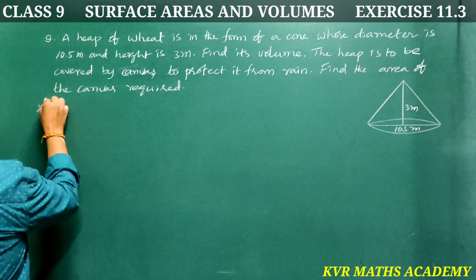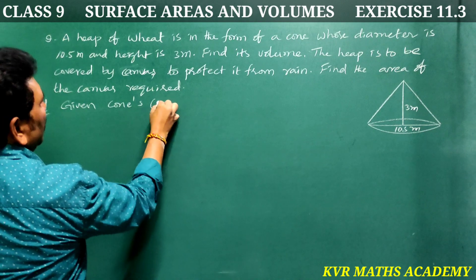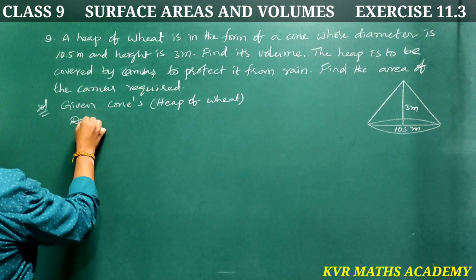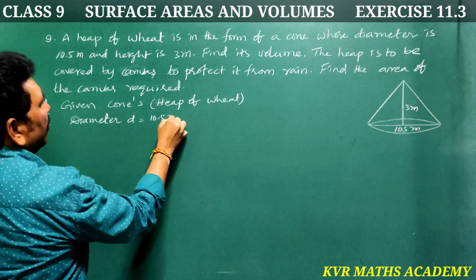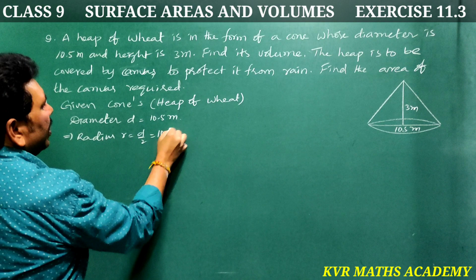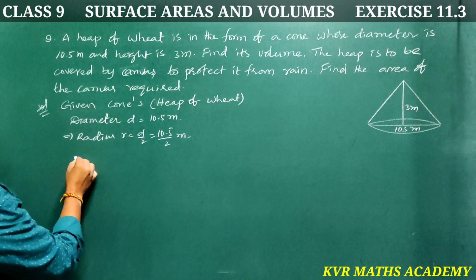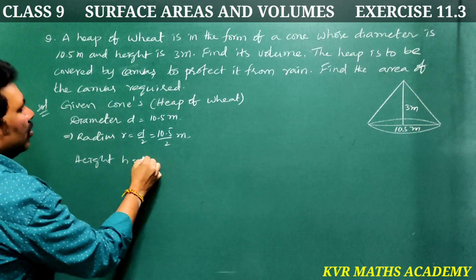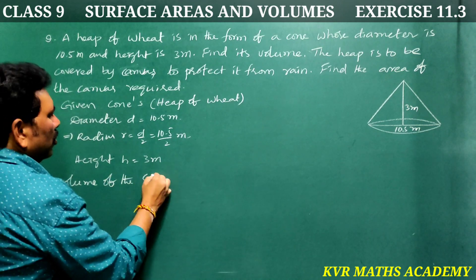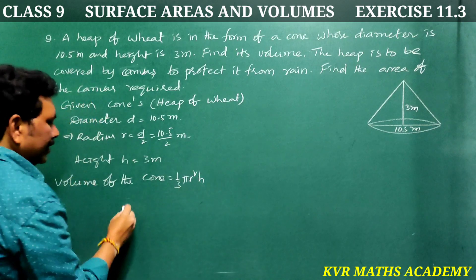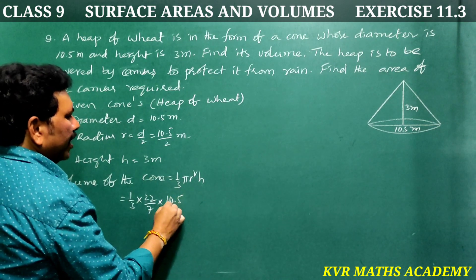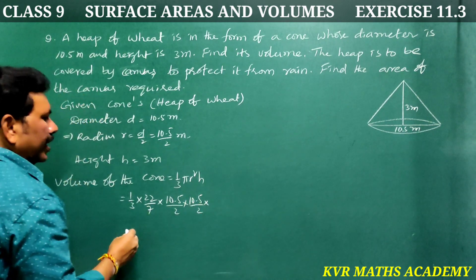Given: Diameter d equals 10.5 meters. Therefore, radius r equals d/2, which is 10.5/2 meters. Height h equals 3 meters. Volume of the cone equals one-third π r² h, which is one-third times 22/7 times (10.5/2) times (10.5/2) times 3.